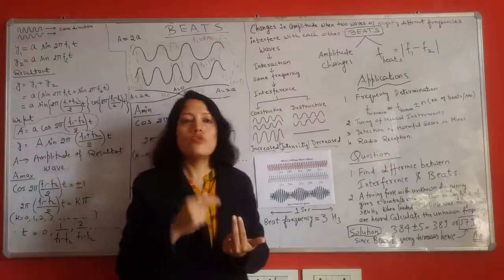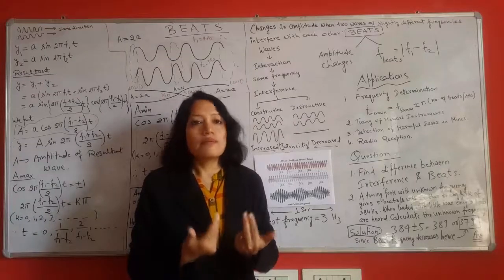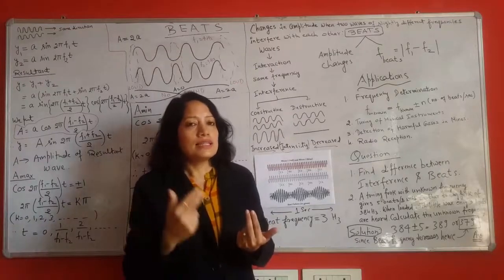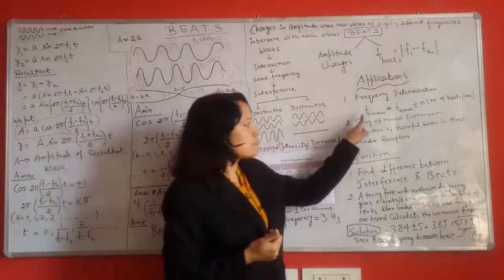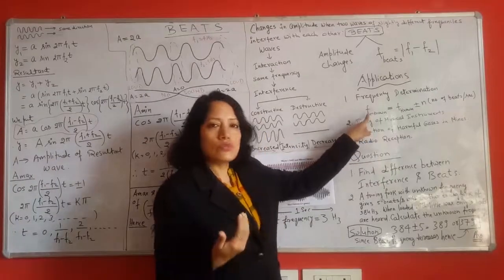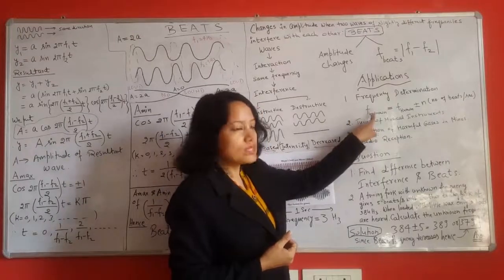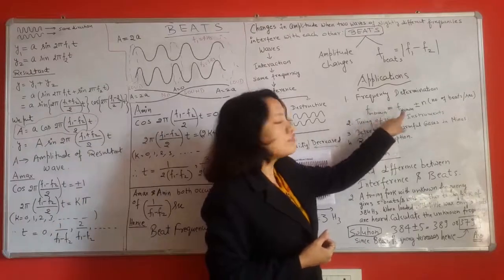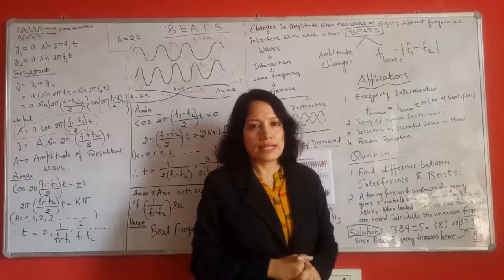If no beats are heard it means that both are of same frequency. But if beats are heard then the number of beats per second are counted, and using this formula the frequency of unknown source is determined. The formula is the frequency of unknown source is equal to frequency of known source plus or minus number of beats per second.